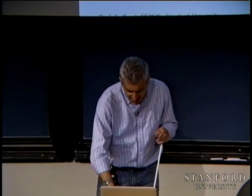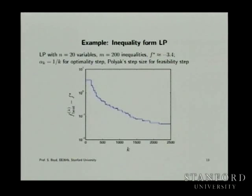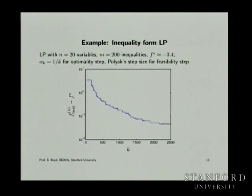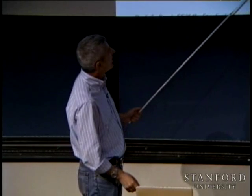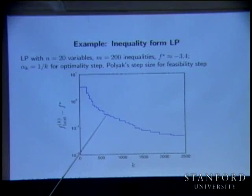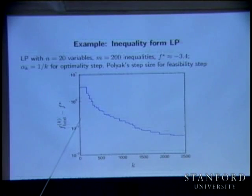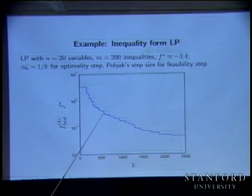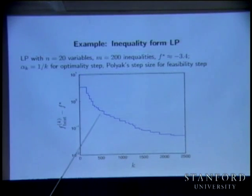So you should divide these by 20. You said 20 interior point steps, so at the cost of 20 subgradient steps, you'd have actually solved the problem — you've solved it to about 10 percent accuracy with this subgradient method.